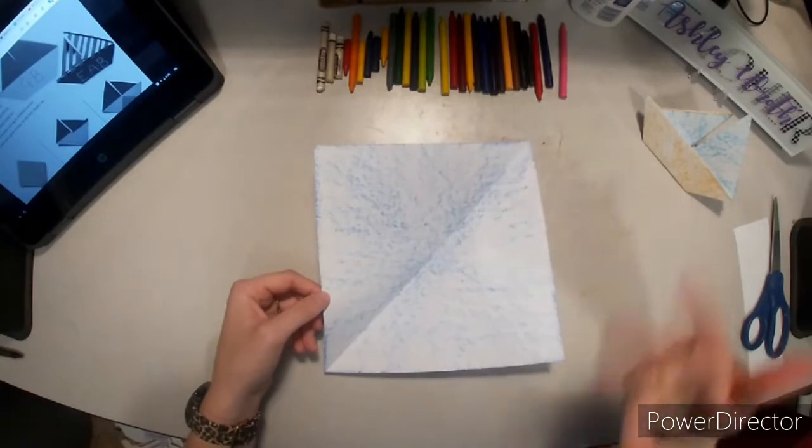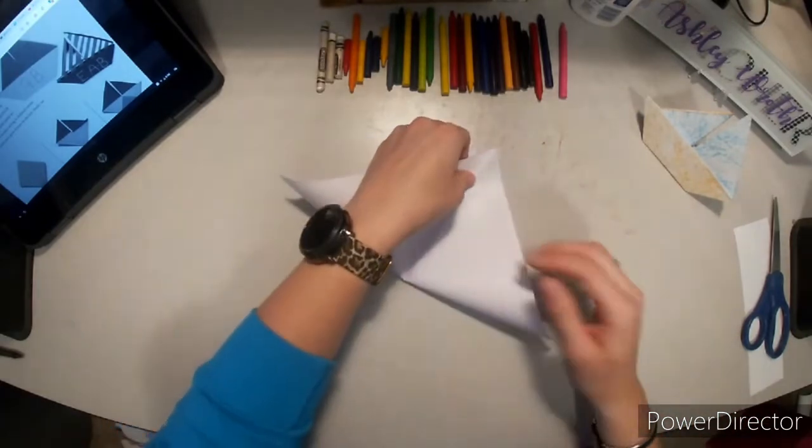Then I'm going to fold it in the other direction. Match up the corners so I have two valley lines that make an X.